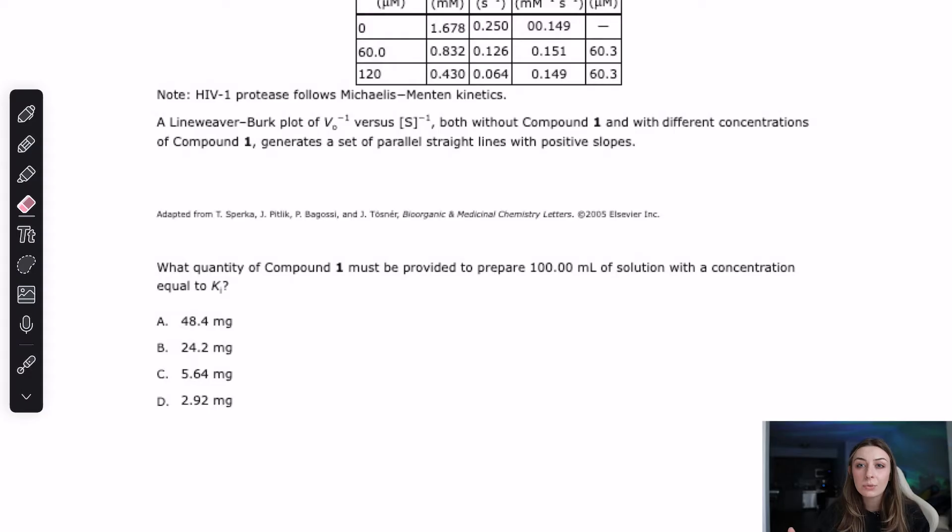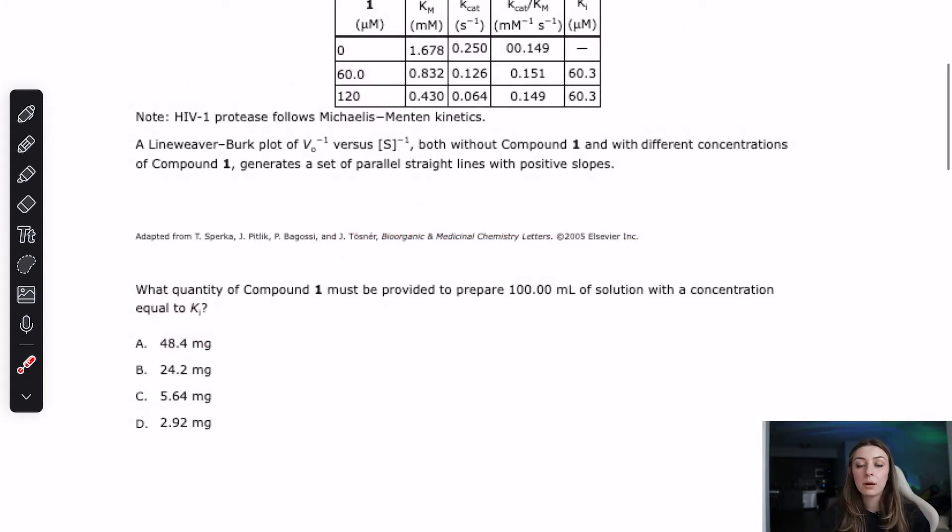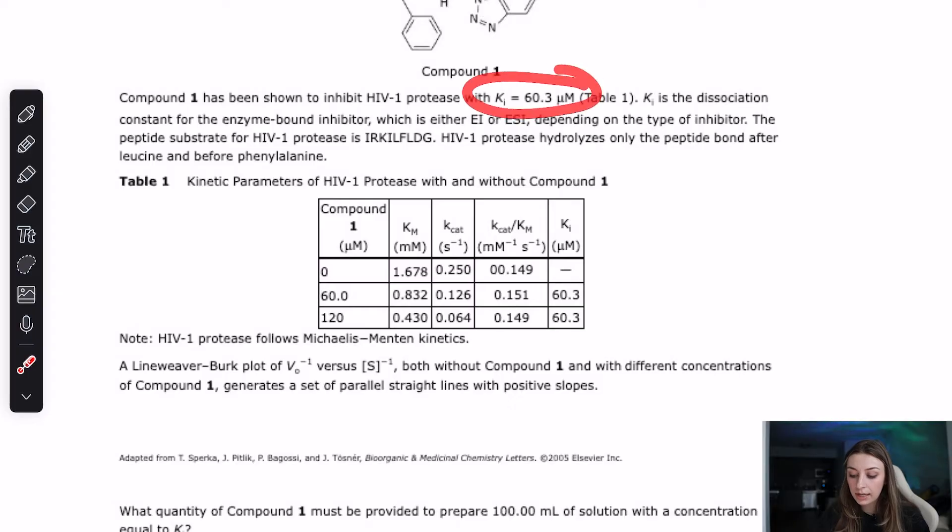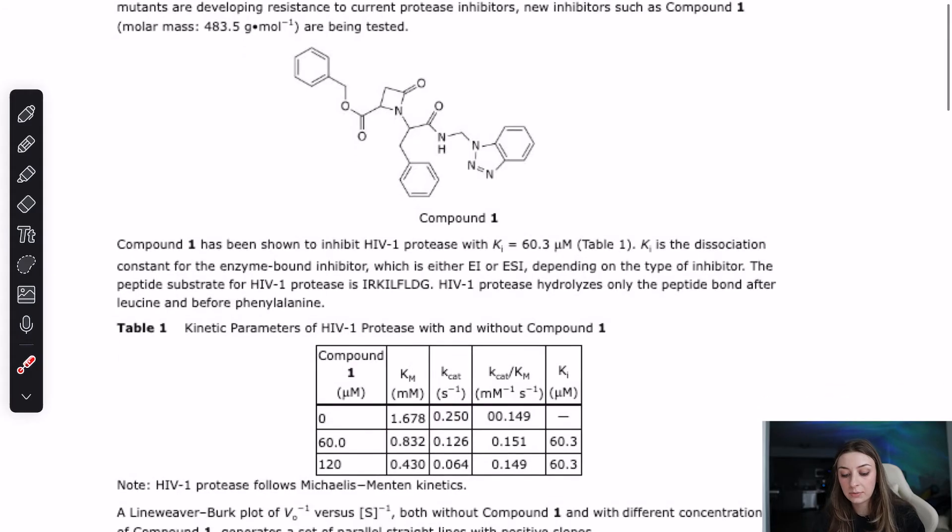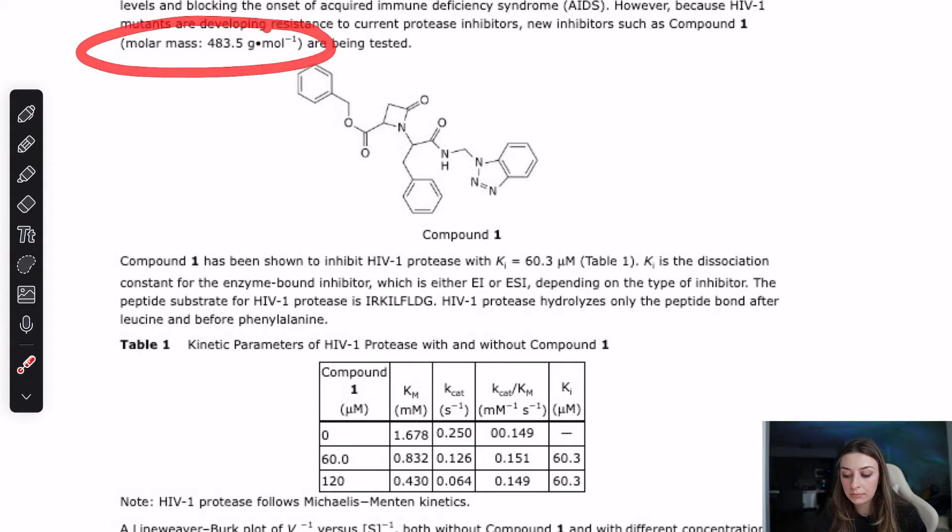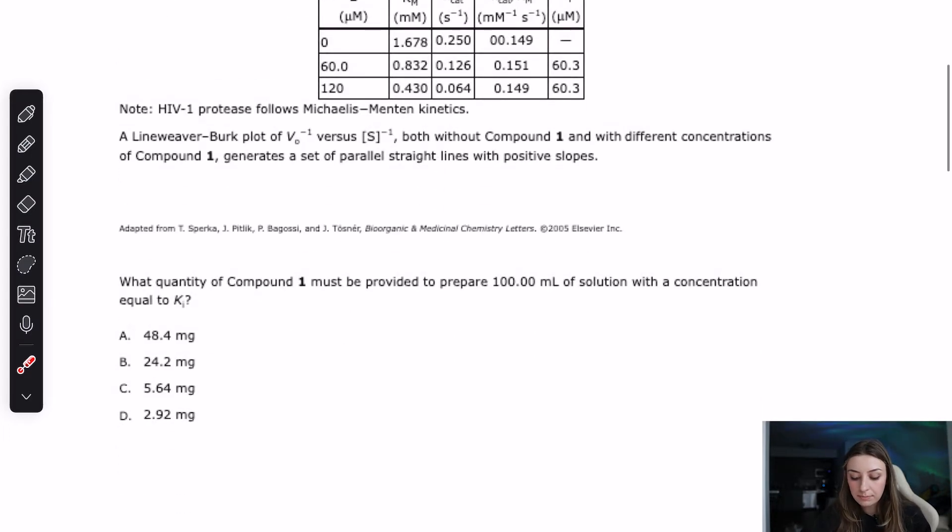The second problem that can happen that we talked about was not getting something in the passage. So there's a couple things that you had to glean from the passage to get this question right. One of them was Ki, it specifically mentioned the number right here. And if it had asked anything about the content of what Ki is, then you would have to see this sentence right here, which talked about how it's a dissociation constant for the enzyme inhibitor. Another very important thing that was necessary was this molar mass right here. They talked about compound one having that molar mass, you had to pick up on that to get that question right. So if you are missing things within the passage, if you're not good at active reading within these science passages, you need to flowchart.